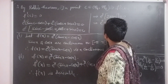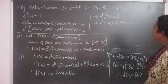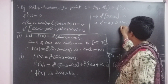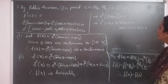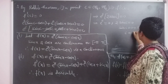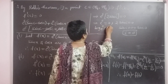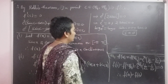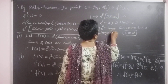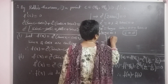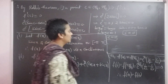Then e power c into 2 sin c equal to 0. Either e power c equal to 0, which gives c equal to 1 after taking log on both sides — since log 0 gives c log e equal to 1, so c equal to 1. Or 2 sin c equal to 0, giving sin c equal to 0, so c equal to 0 degrees. Therefore c equals 0 degrees or c equals 1.